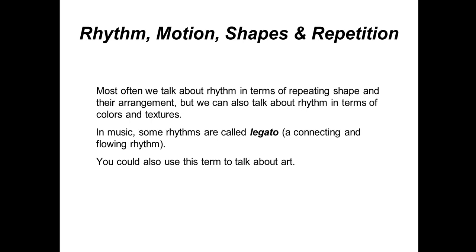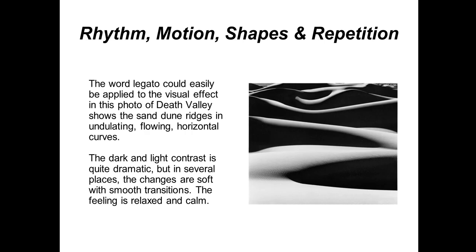You can also use the term legato to talk about art. It would easily apply to the visual effects of this photo of Death Valley, showing sand dunes undulating and flowing in horizontal curves. The dark and light contrast is quite dramatic, but in several places the changes are soft with smooth transitions — the feeling is relaxed and calm. Although high contrast value is often associated with high energy, this is actually an exception; the calm energy has a lot to do with the shapes of the dunes.